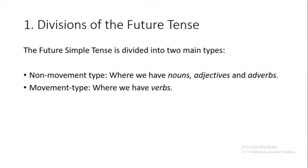The future simple tense is divided into two main types: the non-movement type — القسم غير الحركي — where we have nouns, adjectives, and adverbs; and the movement type — القسم الحركي — where we have verbs.